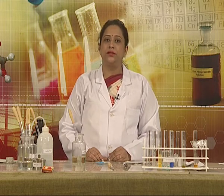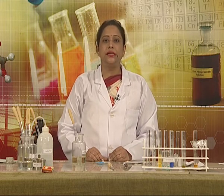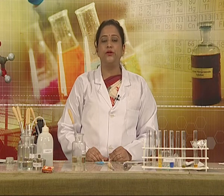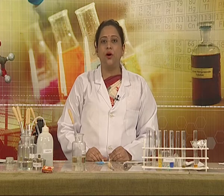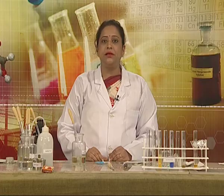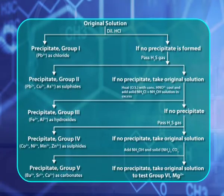Kindly note, today we have performed the test of lead and copper ions in the known salts. But if an unknown salt is to be analyzed for the presence of cations, then we would follow the scheme of qualitative analysis and do tests for cations of group 1 first. In case cations of group 1 are absent, then we perform tests for group 2 cations as shown today.